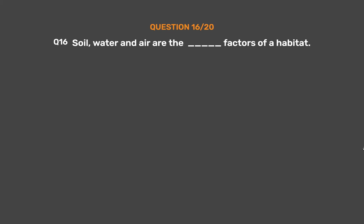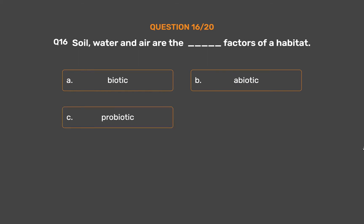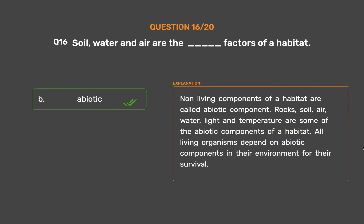Question 16. Soil, water and air are the blank factors of a habitat. Option A: Biotic. Option B: Abiotic. Option C: Probiotic. Option D: Classic. The correct answer is Option B: Abiotic. Non-living components of a habitat are called abiotic components. Rocks, soil, air, water, light and temperature are some of the abiotic components of a habitat. All living organisms depend on abiotic components in their environment for their survival.